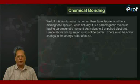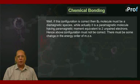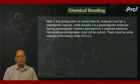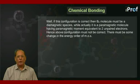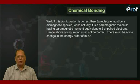Well if this configuration is correct then B₂ molecule must be a diamagnetic species. Well actually it is a paramagnetic molecule having paramagnetic moment equivalent to two unpaired electrons. Hence above configuration must not be correct. There must be some change in the energy order of molecular orbitals.